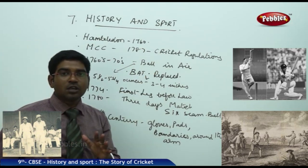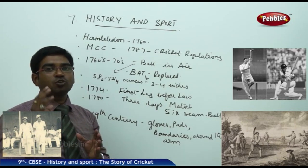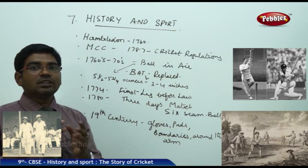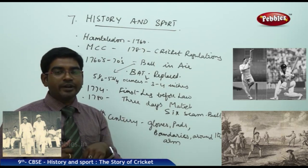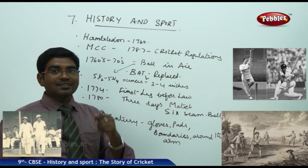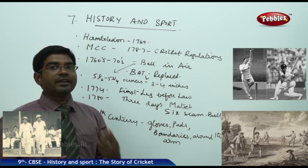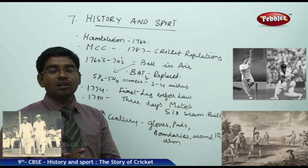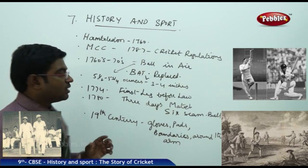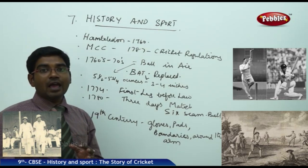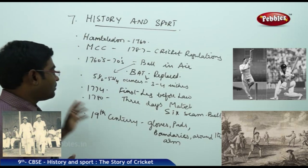From the 1760s to 1770s, many changes occurred in cricket. Till that time, the ball was rolled down on the ground. But then it was changed so the ball had to be thrown through the air. The immediate result was that the bat shape changed. Earlier the bat was curved to connect with a grounded ball, but now, as the ball is thrown in the air, the batsman has to judge timing and pitch. So the bat was changed to a flat one, sizes were fixed, the ball was confined to 5.5 to 5¾ ounces, and the bat width to 3 to 4 inches.